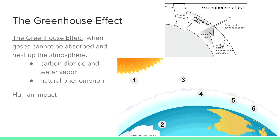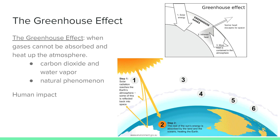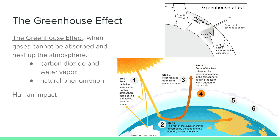The greenhouse effect occurs when gases trap heat in the atmosphere. The two greenhouse gases with the largest impact are carbon dioxide and water vapor. While it sounds scary, this is actually a very normal process that maintains the Earth's temperature range. The concerning part is that human activities — such as burning fossil fuels, certain agricultural practices, and land clearing — are increasing the amount of greenhouse gases released into the atmosphere, trapping extra heat and causing the Earth's temperature to rise. We'll talk about that more in the next video.